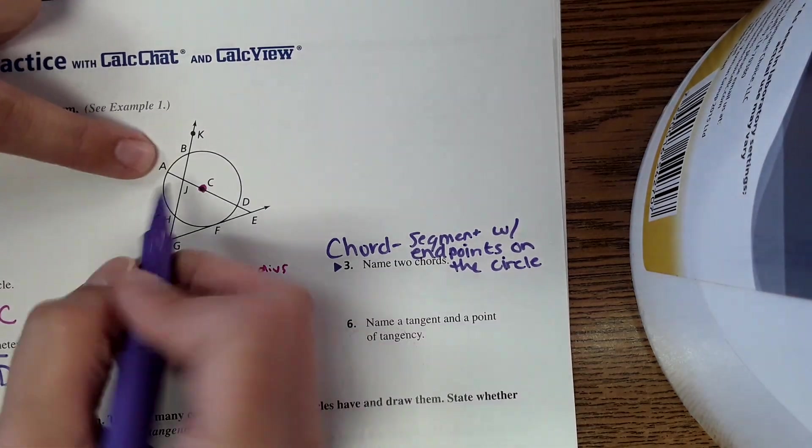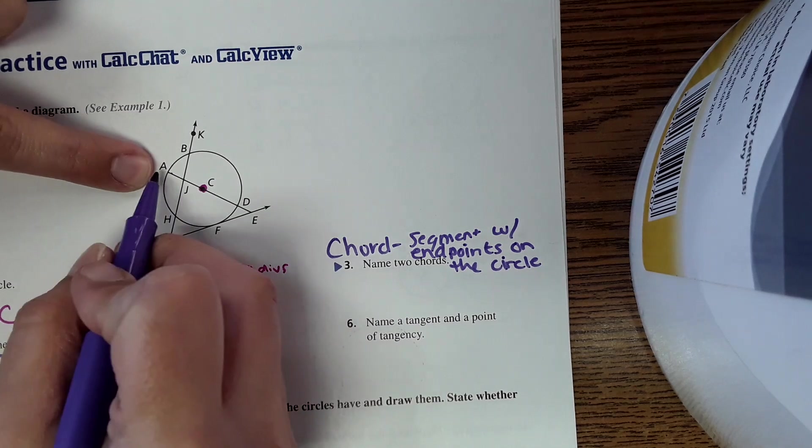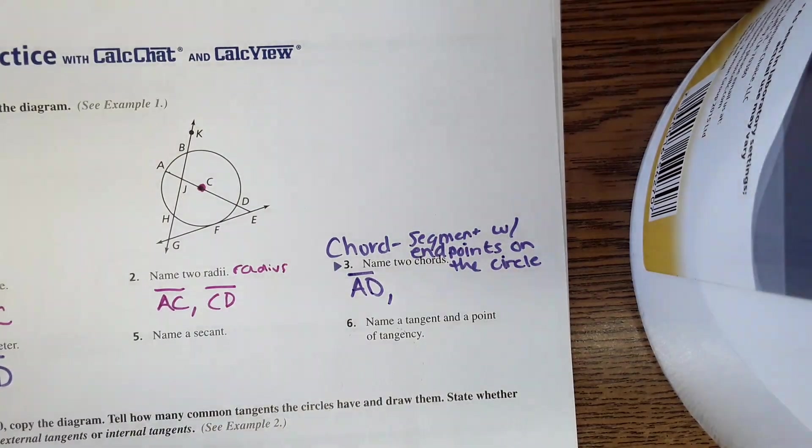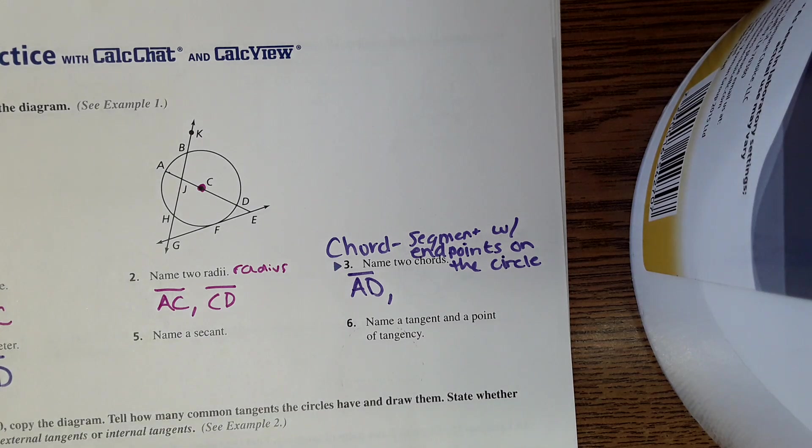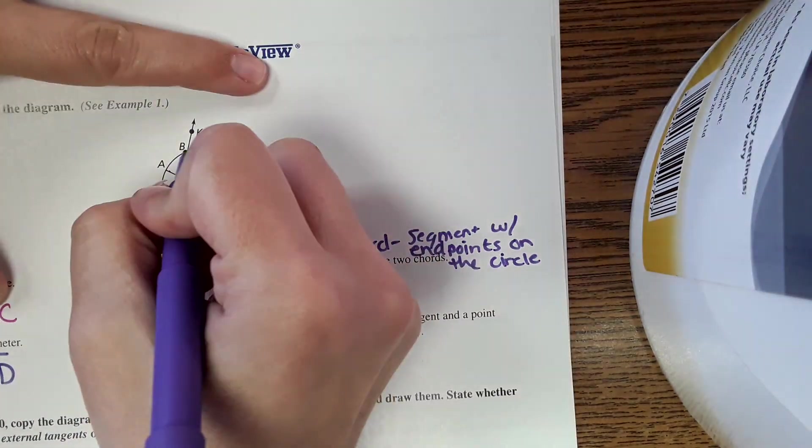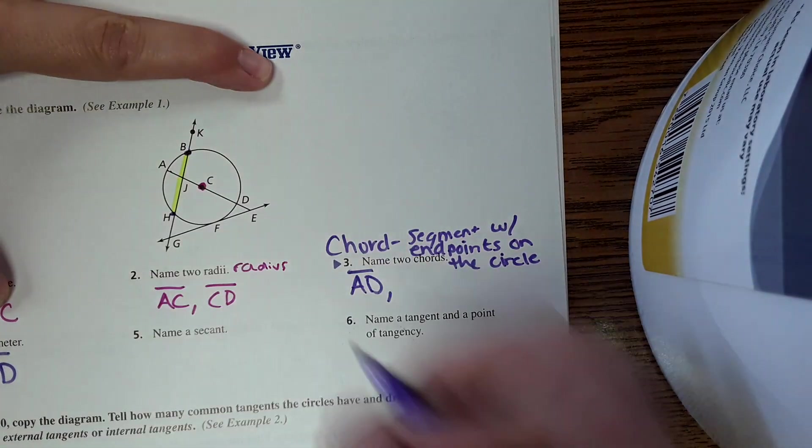So for example, the diameter is a chord. So AD is a chord. And then the other chord we have here is BH. This would be a segment with endpoints on the circle.